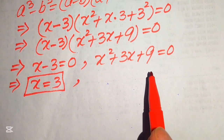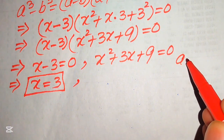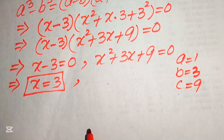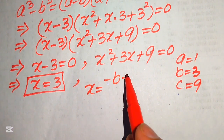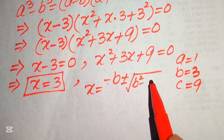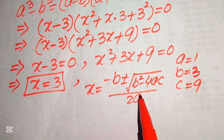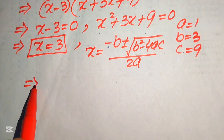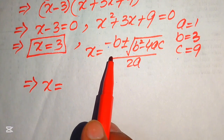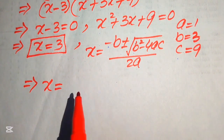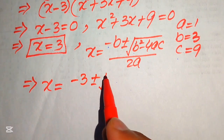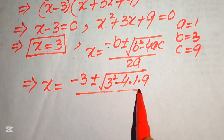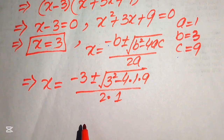For the quadratic x² plus 3x plus 9 equals 0, the coefficients are a equals 1, b equals 3, and c equals 9. We apply the quadratic formula: x equals minus b plus or minus the square root of (b² minus 4ac), all divided by 2a. Substituting the values gives us minus 3 plus or minus the square root of (9 minus 4 times 1 times 9), divided by 2 times 1.